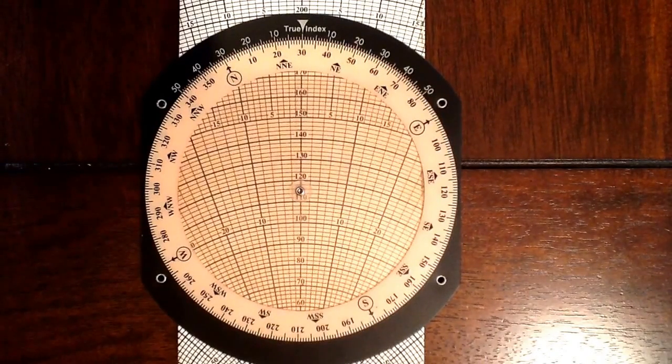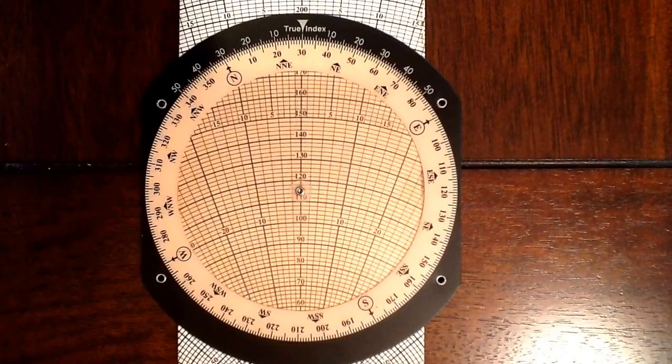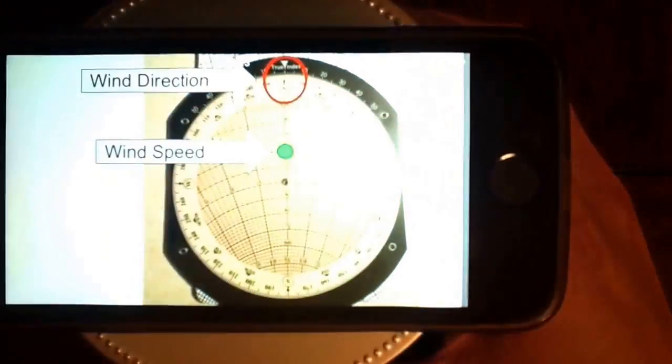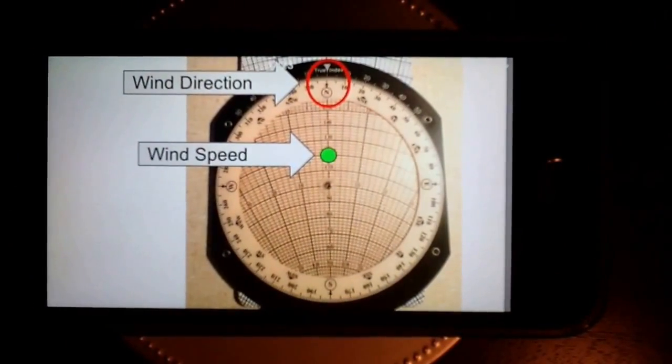You can think of this flight computer as having two configurations or modes: wind mode and aircraft mode. In wind mode, we're going to set the wind direction and speed.